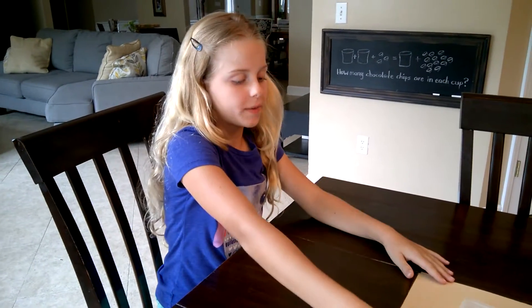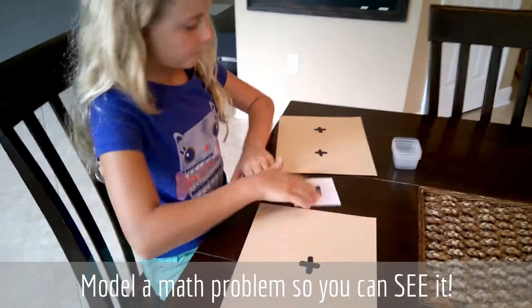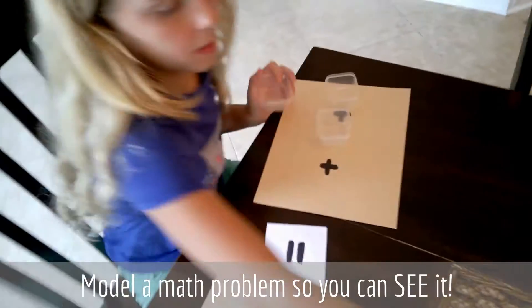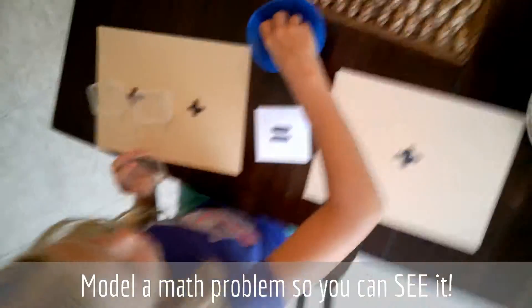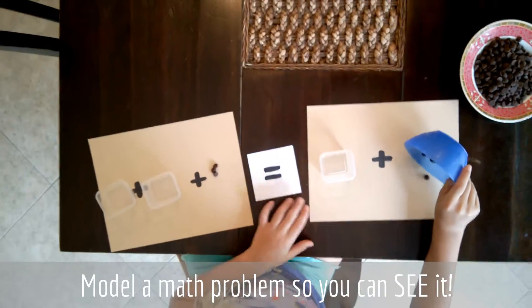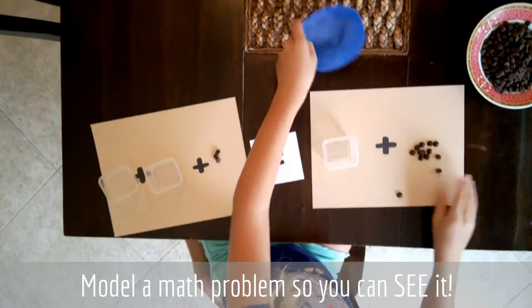So we are going to model the problem. 1 cup plus 1 cup plus 3 chocolate chips equals 1 cup plus 13 chocolate chips.